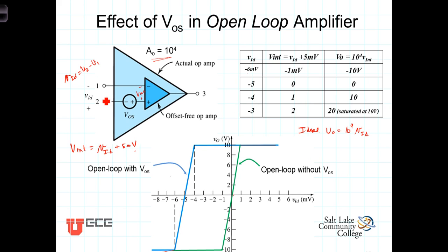When we increase the voltage here from a negative 5 to a negative 4 millivolts, we end up with the internal voltage being 1 millivolt, and the output voltage will then be 10 volts, and then saturating from there on.